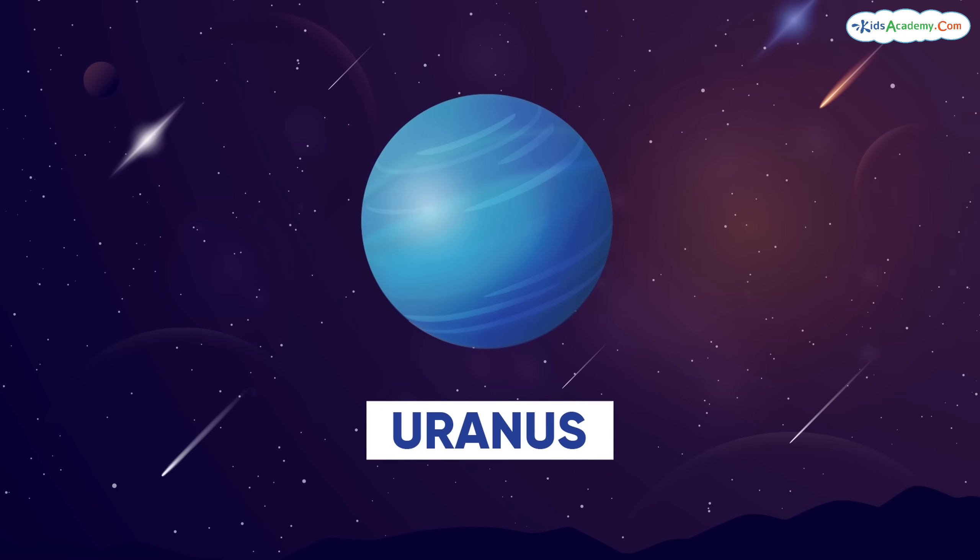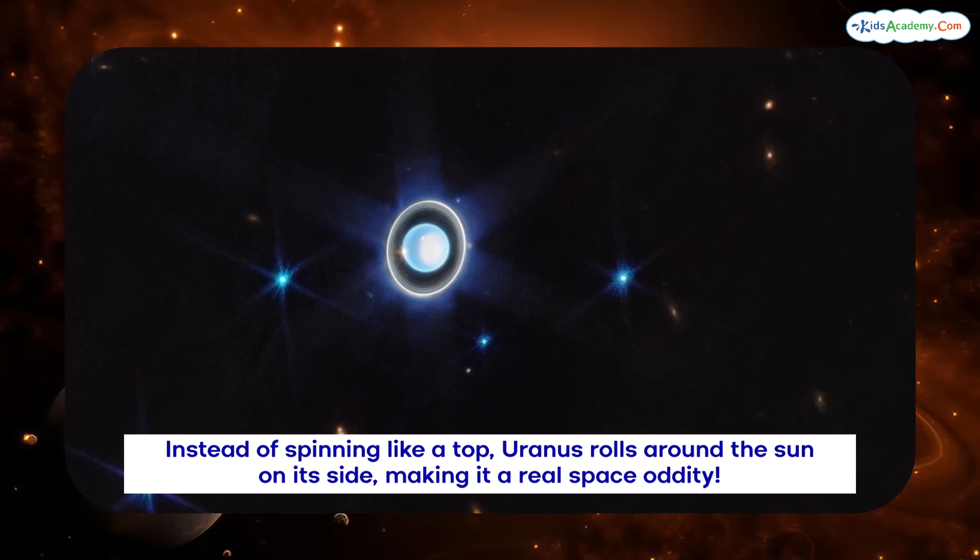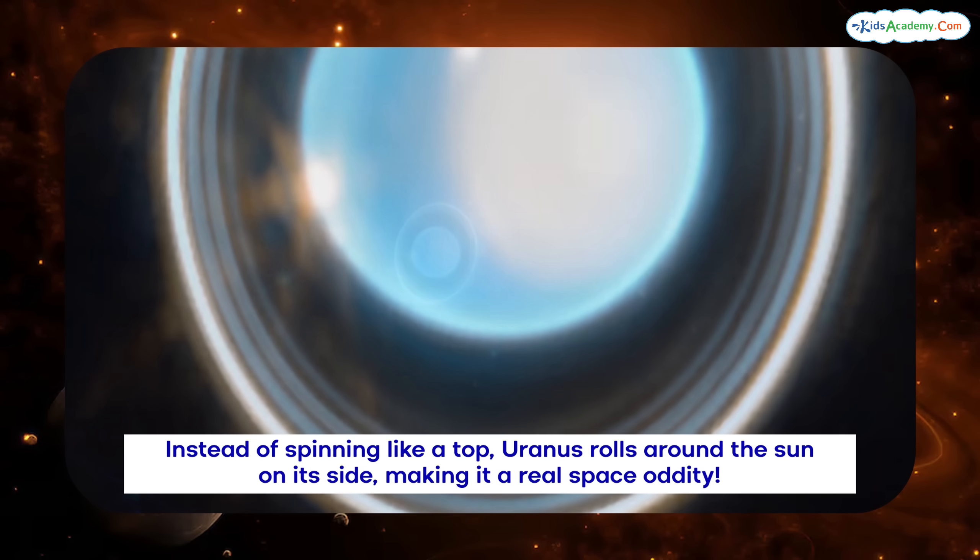Uranus, the sideways planet, likes to do things a little differently. Instead of spinning like a top, Uranus rolls around the sun on its side, making it a real space oddity.